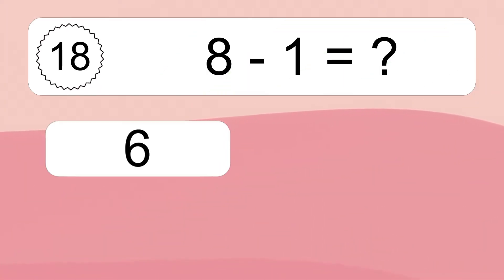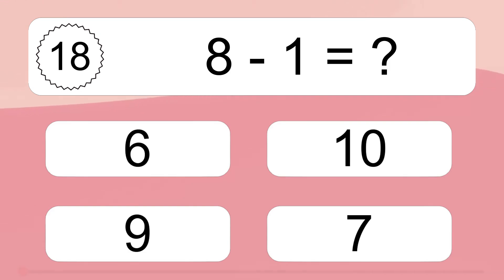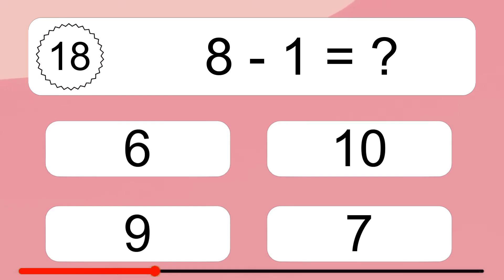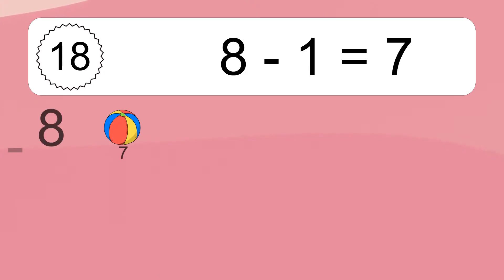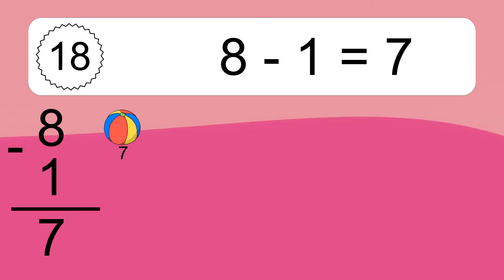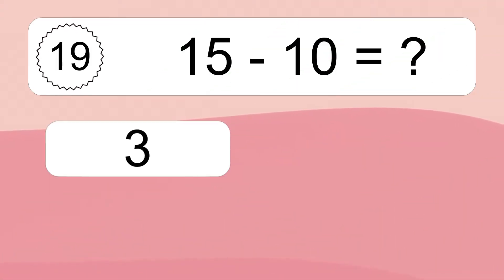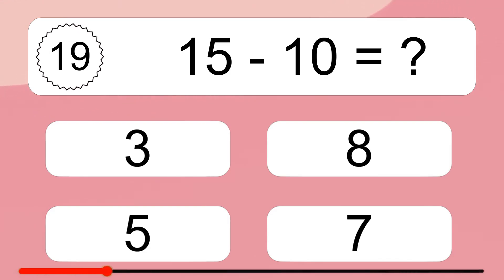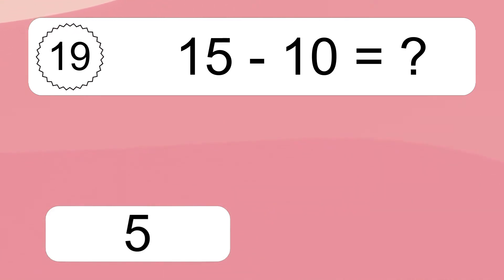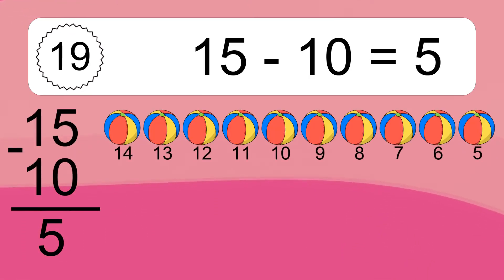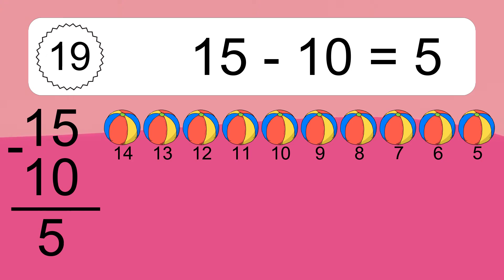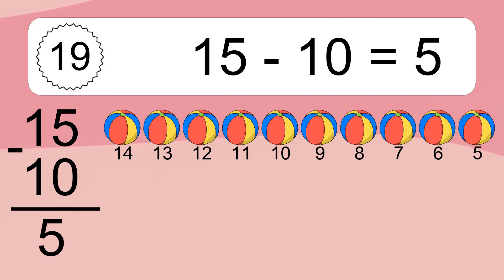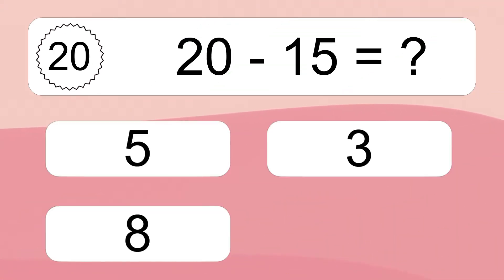8 minus 1 equals what? 8 minus 1 equals 7. Let's count it. 7. 15 minus 10 equals what? 15 minus 10 equals 5. Let's count it. 14, 13, 12, 11, 10, 9, 8, 7, 6, 5.